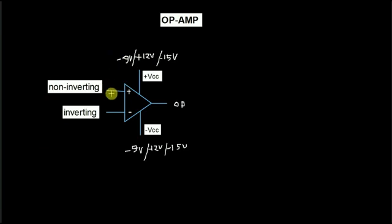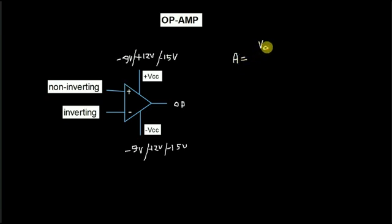In the operational amplifier, gain is the ratio of output to input. If we give a signal to the output and input, that ratio we call gain. We denote gain as A. So A is equal to V-out divided by V-in. The output to input ratio is called gain.